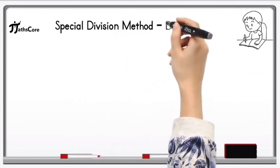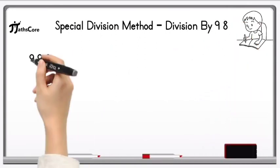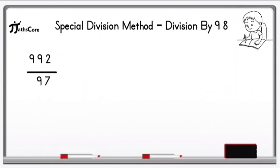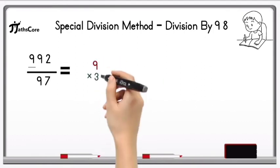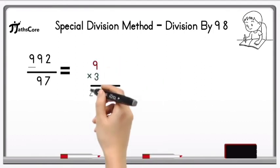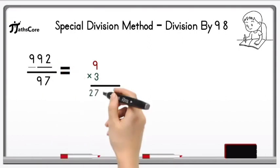Let's solve the third example. The example is 992 divided by 97. So write down the hundreds plus digit 9 here and multiply it with 3. 9 multiply by 3 equals 27, and add this 92 in it. 27 plus 92 equals 117.